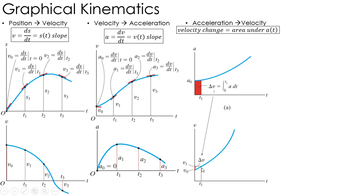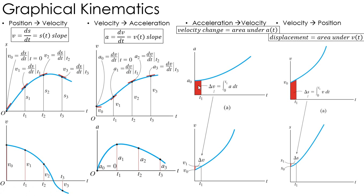So knowing my initial velocity, I can find the change in velocity, get to the next step by just taking the area under the acceleration curve. Same thing goes going from velocity to position. Knowing my initial position, I can find the area under the curve,